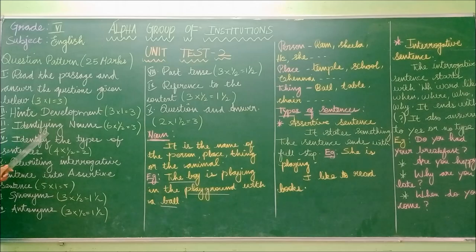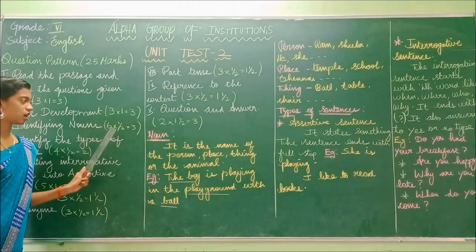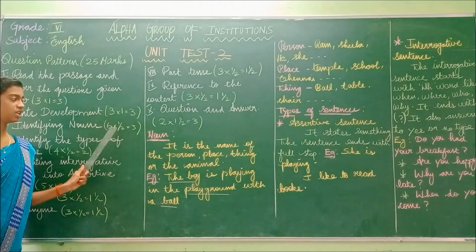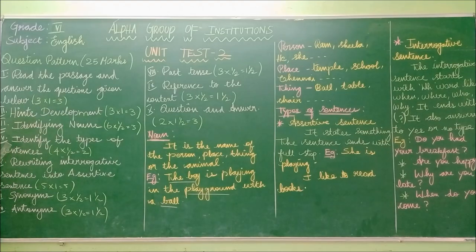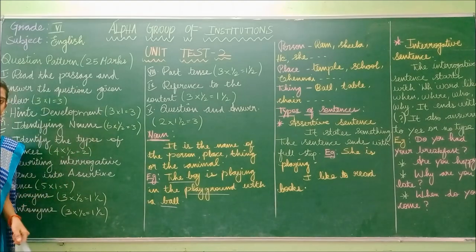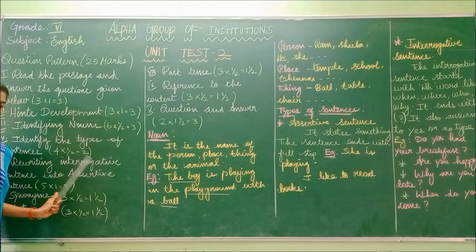The third section is identifying nouns. There will be 6 nouns, each carrying half a mark, for a total of 3 marks. The fourth section is identifying the types of sentences. There will be 4 sentences, each carrying half a mark, for a total of 2 marks.